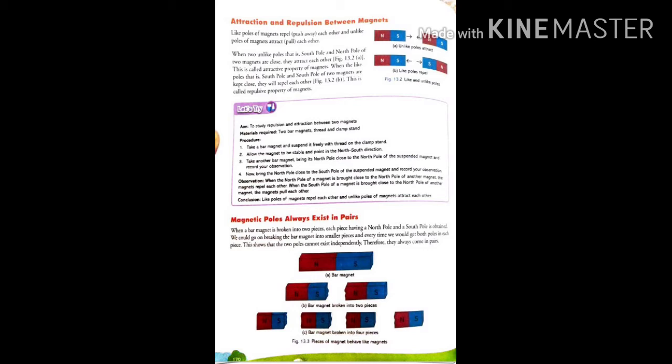When a bar magnet is broken into two pieces, each piece having a north pole and a south pole is obtained. When we take a bar magnet and break that magnet into two pieces, again two poles will exist—one will be north pole and another will be south pole.